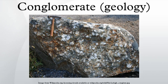Conglomerates form by the consolidation and lithification of gravel. Conglomerates typically contain finely-grained sediment, e.g., either sand, silt, clay, or a combination of them, called matrix by geologists, filling their interstices, and are often cemented by calcium carbonate, iron oxide, silica, or hardened clay.